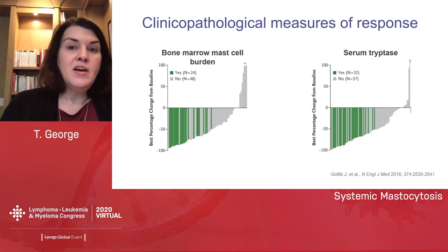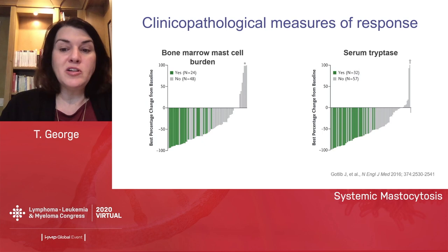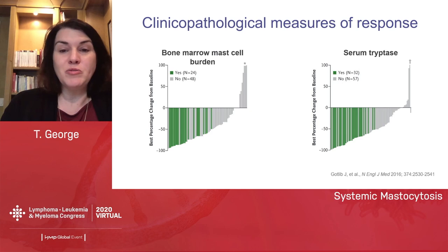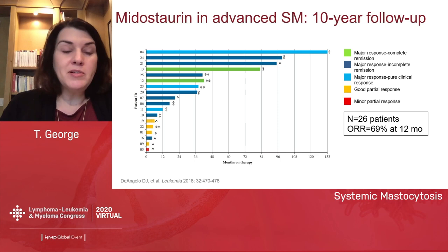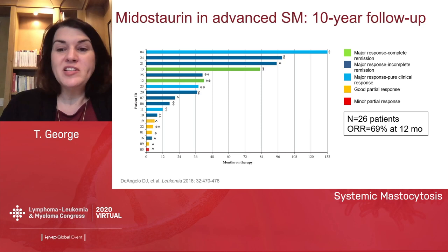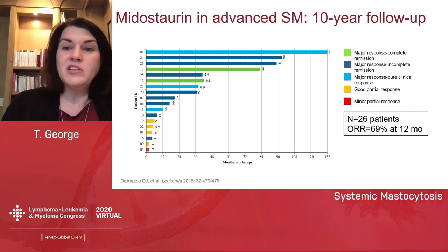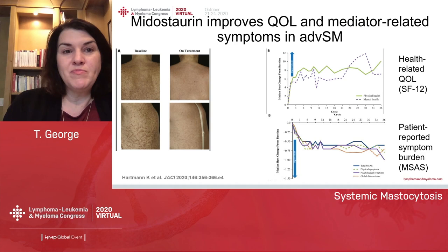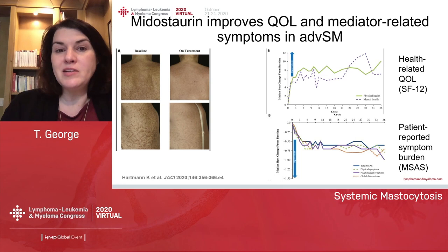We had clinical pathological measures of response, including bone marrow mast cell burden and serum tryptase. Waterfall plots show a marked change from baseline — marked decreases in bone marrow mast cell burden and serum tryptase. We also published an investigator-initiated trial with 26 patients, showing an overall response rate of 69% at one year, including a few complete remissions. We also showed that midostaurin improves quality of life and mediator-related symptoms in patients with advanced SM.